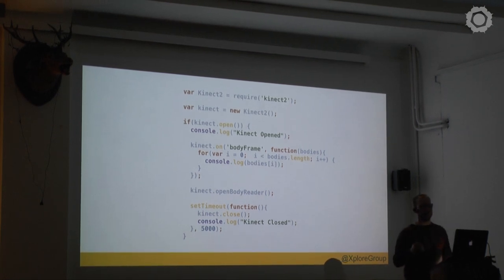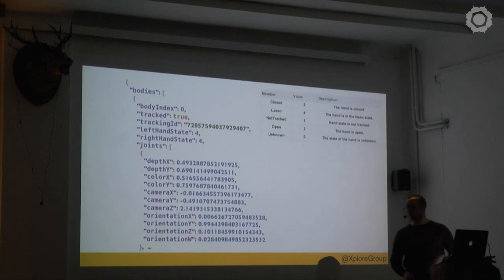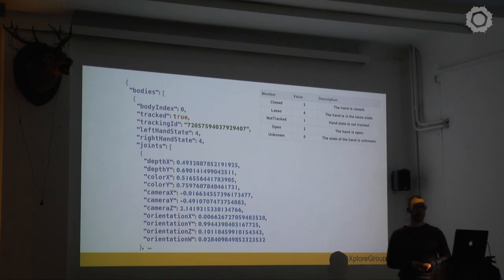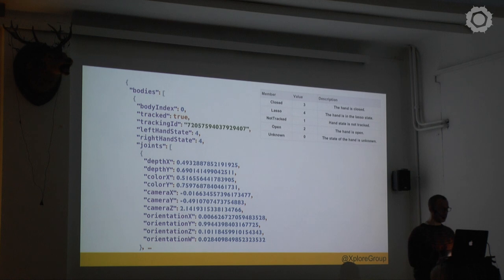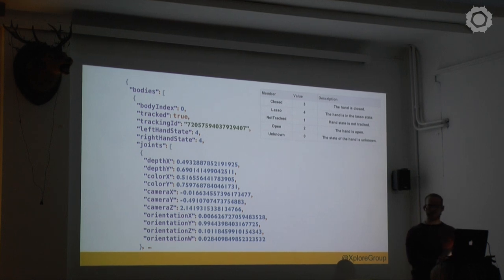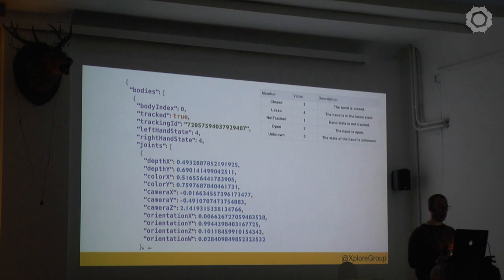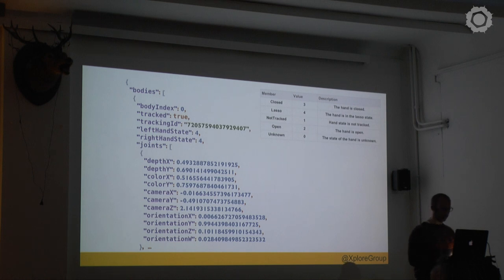The console log outputs the information of the body being tracked, and this is basically what we get from the console logs — the information you can start to play with. You have your body index, whether you're being tracked or not, the hand states, and all 25 joints. For each joint you get the x, y, and z — whether the person is turned, whether the hand is closed, and things like that. For example: hand closed, lasso tool, hand not tracked if it's behind your back, open, or unknown.